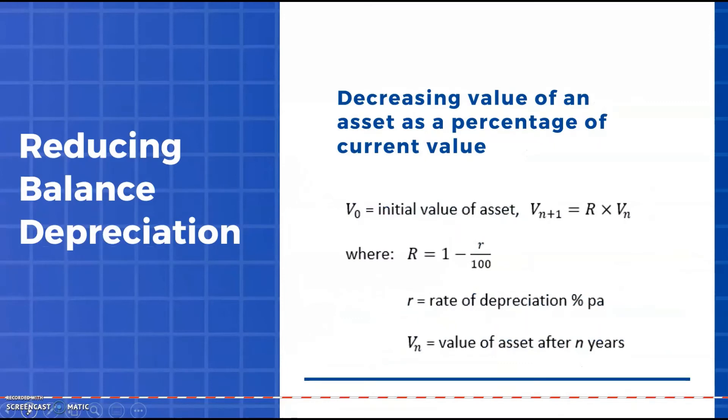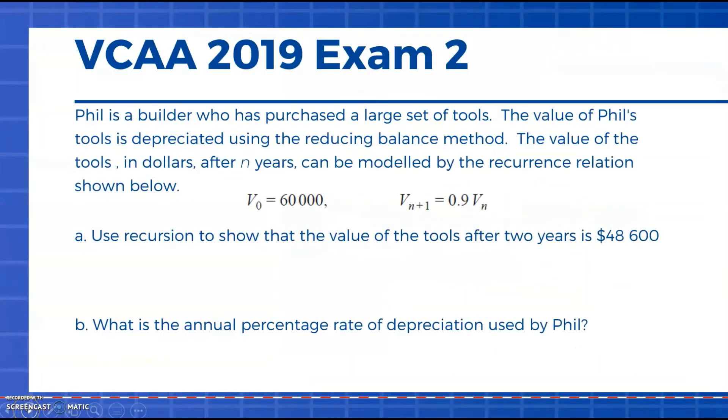Final example: we're looking at reducing balance depreciation. In this case this is our example of geometric style and we're looking here at the decreasing value of an asset as a percentage of its current value. So here we have our different style of recurrence relation where we have this value of R or capital R. Quite often in order to calculate that we are given a rate of depreciation and our first step is to find this big R.